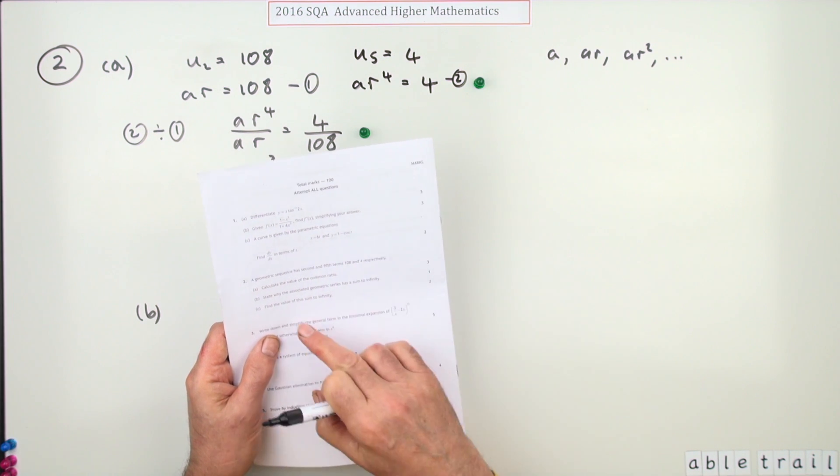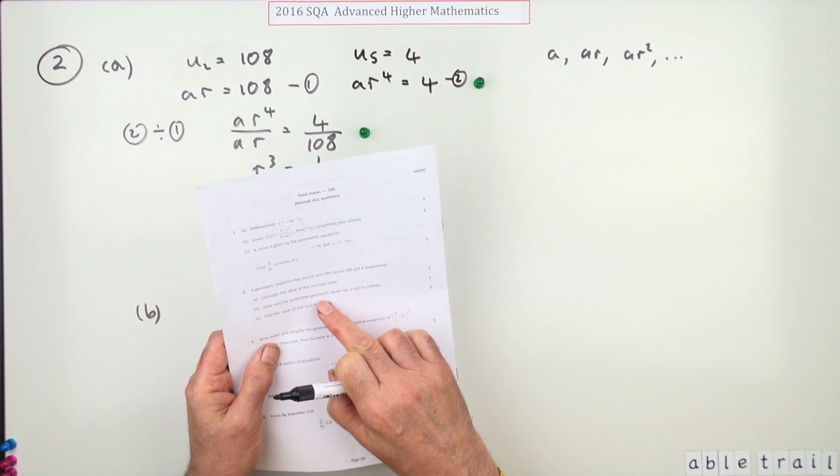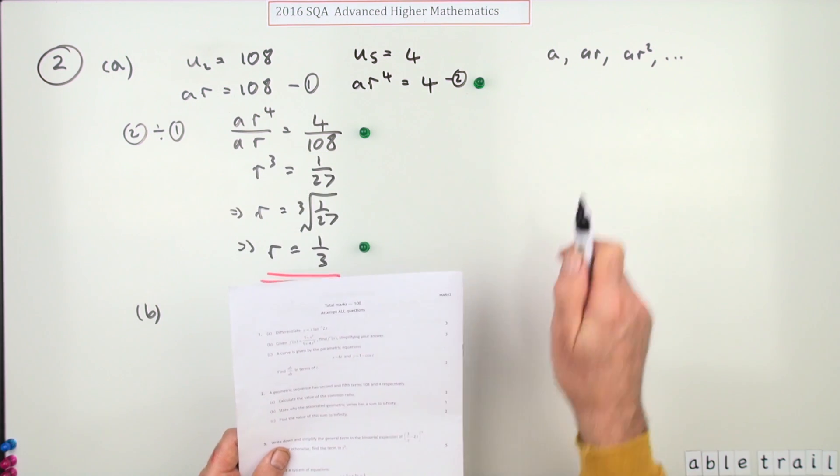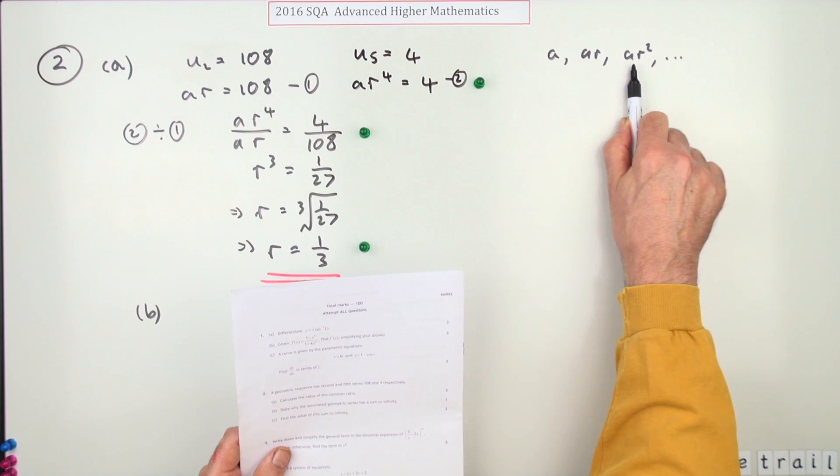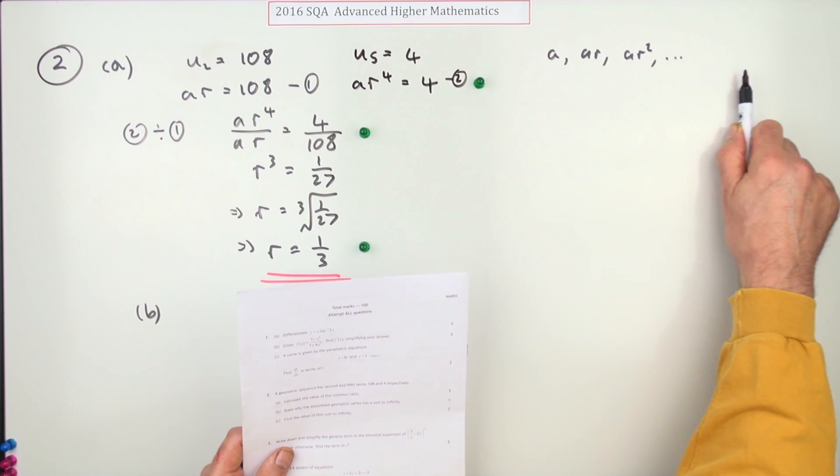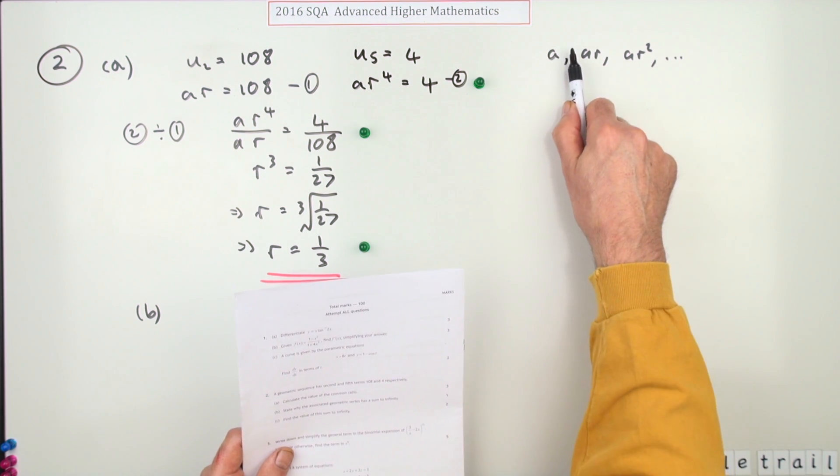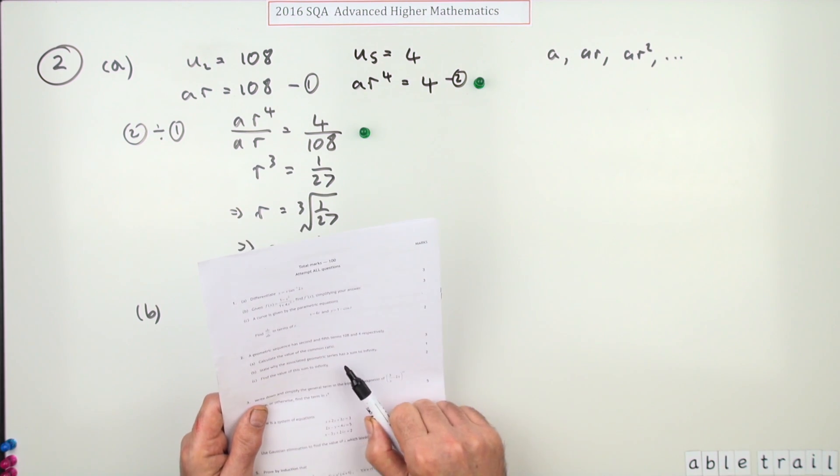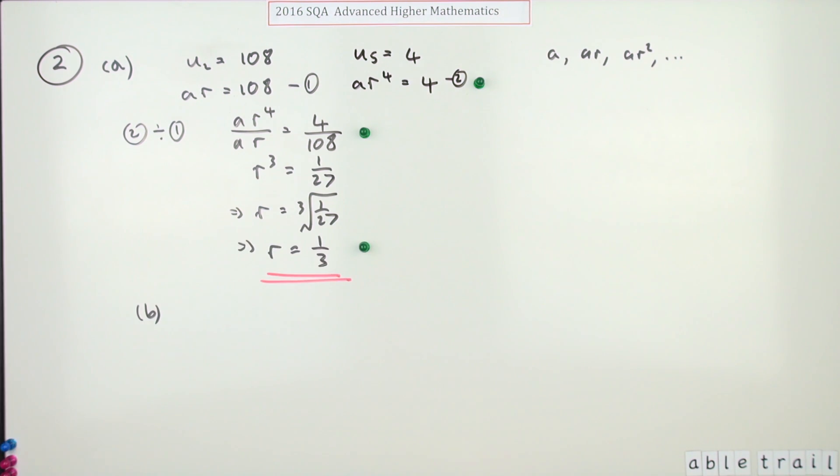B, just for one mark, state why the associated geometric series, that means sequence when the terms are stated separately, in order, series when you've got the sum of the terms, state why the associated geometric series has a sum to infinity. Well for a geometric series, quite simply, it'll converge, if you keep multiplying by a number that's less than one, rather between one and negative one, that's a proper fraction. But you just state it.